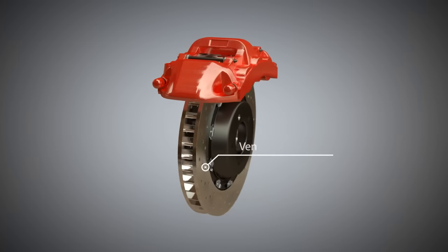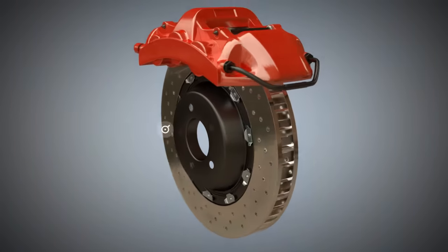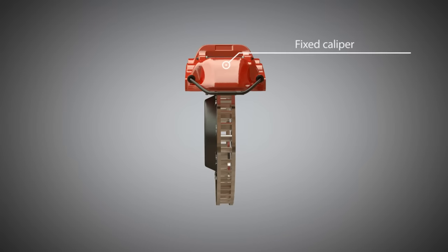An important component of the disc brake is the brake disc. The brake disc is divided into two parts and has small holes for better cooling.